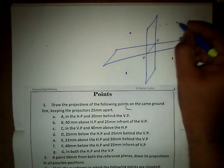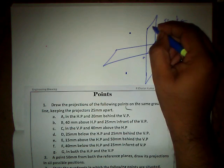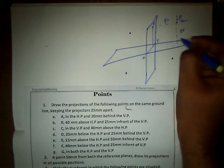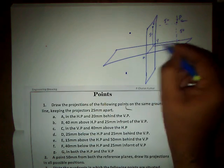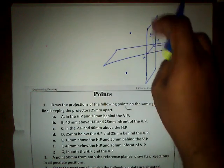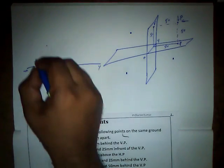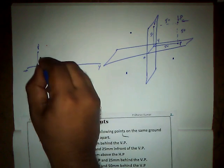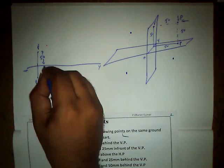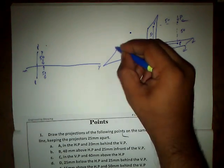For the first position — 50mm above HP and 50mm in front of VP — we have the front view and top view. If we consider our point as P, the front view projection P' is at a distance of 50mm above the XY reference line, and the top view, small p, is 50mm below the XY reference line after rotating the horizontal plane 90 degrees downwards.